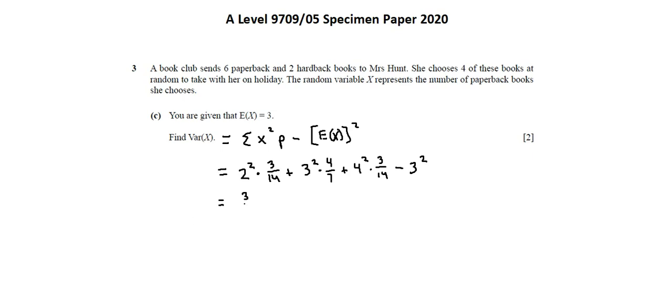And when we simplify, we have 3 over 7, which is the variance of X. And this completes the requirements for 9709 Specimen Paper 5, Question Number 3.